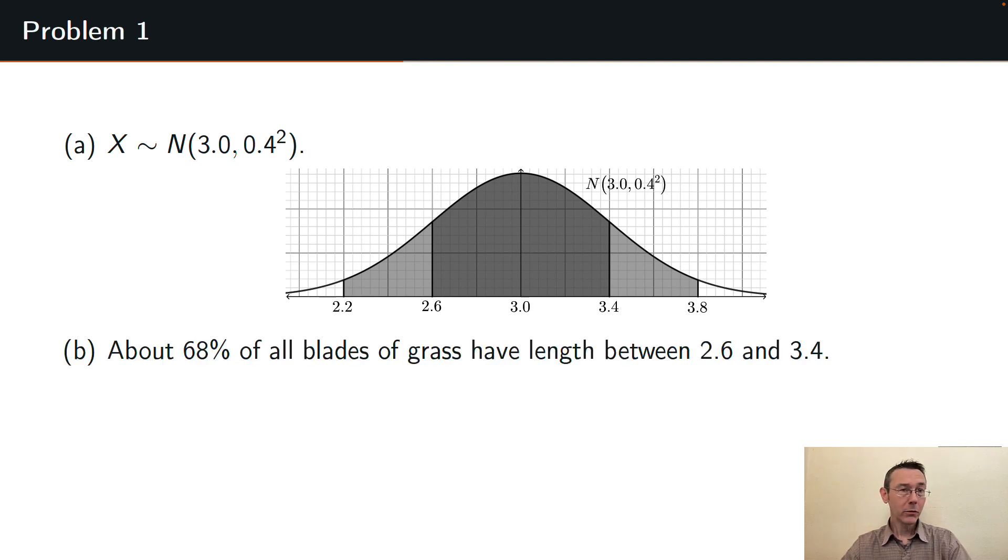The next parts of this problem B, C, and D are all using the empirical rule. The empirical rule says first of all that about 68% of the probability under a normal curve lies within one standard deviation of the mean. So about 68% of blades of grass have lengths between about 2.6 and 3.4 inches.